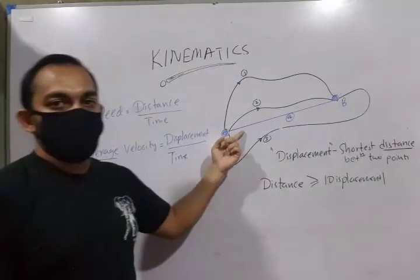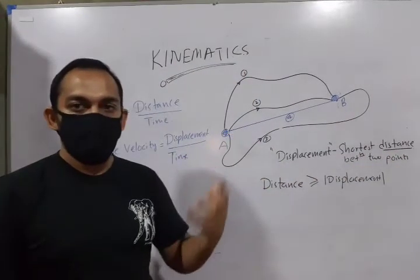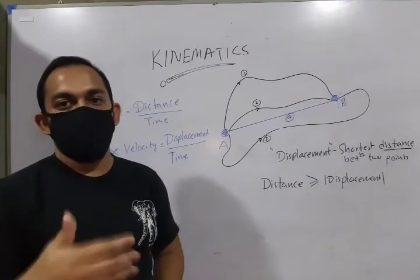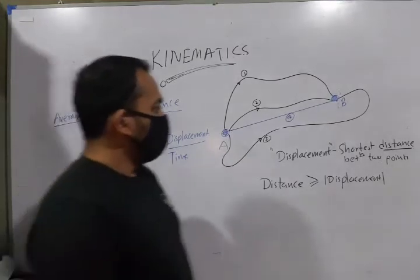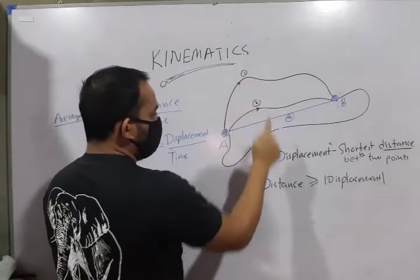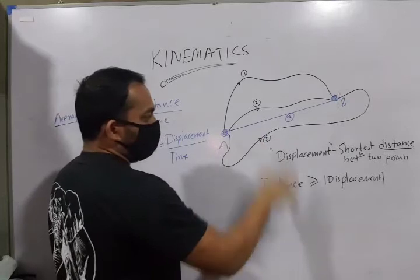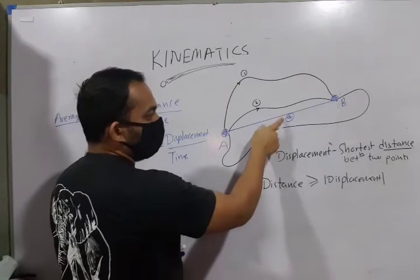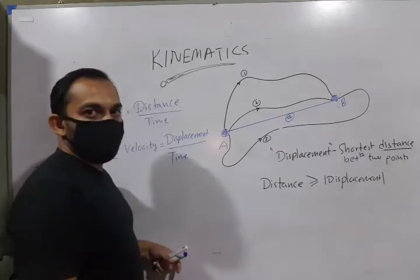So, displacement is also a distance but with an attitude. Attitude means it has a direction. Now, if you can see here that all these paths, path 1, 2, 3 are much larger than this path. They are always larger than this path.